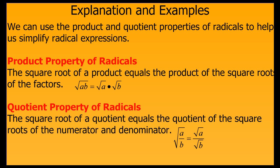The quotient property is very similar, stating that the square root of a quotient equals the quotient of the square roots of the numerator and the denominator. Or stated another way, the square root of the quantity a divided by b is equal to the square root of a divided by the square root of b.